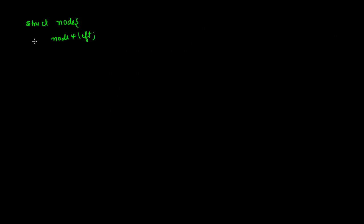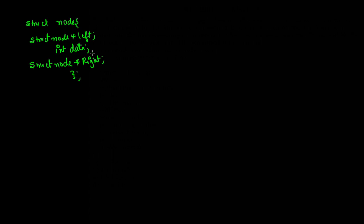Let us see what the node of a binary search tree looks like. It will be: struct node with a struct node* left pointer, an int data field, and a struct node* right pointer. If you compare it with the node of a binary tree, it is actually the same. There is only one restriction imposed on the data — a node goes to the left if the data to be inserted is less than the root data, and to the right if it is greater than or equal to the root data.